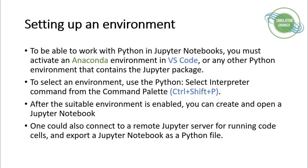Setting up an environment is a really important step. In order to be able to work with Python in your Jupyter Notebook, you must have a framework or environment available in VS Code. I'll be using the Anaconda environment — you can also use other Python environments that include the Jupyter package — but for this tutorial I'll stick with Anaconda. To select an environment, you use the 'Python: Select Interpreter' command, which is the shortcut Ctrl+Shift+P.